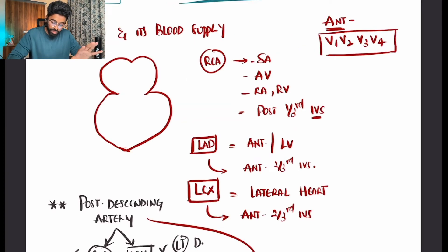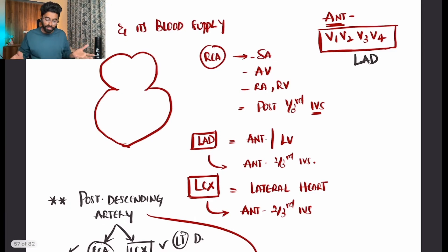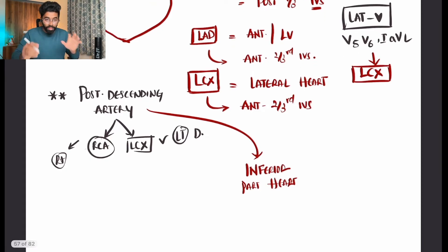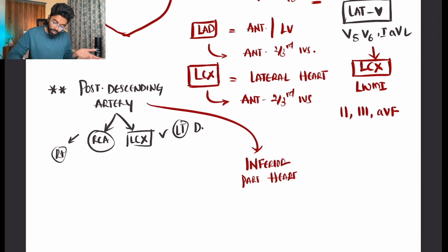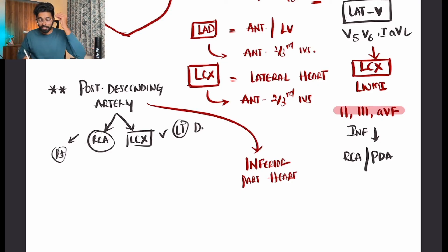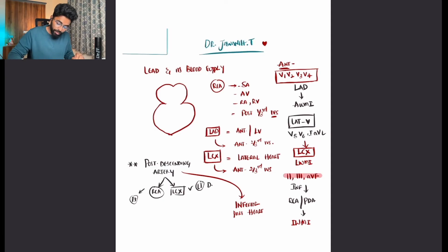V1 to V4 are supplied by the LAD — a block there causes anterior wall MI. The lateral wall is supplied by the left circumflex, so a block there causes lateral wall MI. Leads II, III, and aVF look at the inferior part of the heart, supplied by the RCA and posterior descending artery. A block in the RCA causes inferior wall MI.